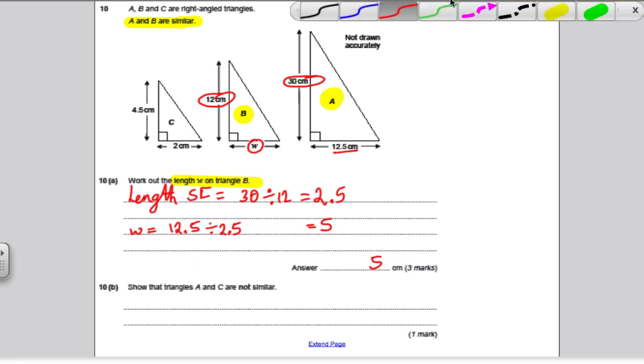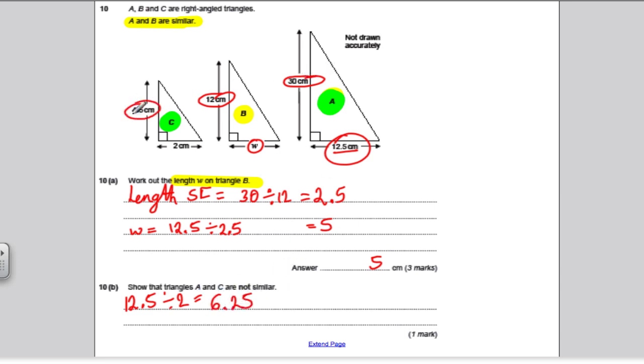Show that triangles A and C are not similar. Let's mark the ones we're doing. For shapes to be similar, they have to have all the same angles inside and the sides related by a scale factor. If they're not similar, if we work out the ratio of two equivalent sides and it's not equal to two other sides we choose, then they can't be similar. So, if we did 12.5 divided by 2, I would get 6.25, and these are equivalent. If I did 30 divided by 4.5, I would get 6.6 recurring. Therefore, there is no common scale factor relating the sides, so no scale factor of enlargement. The shapes are not enlargements of each other, so they are not similar.